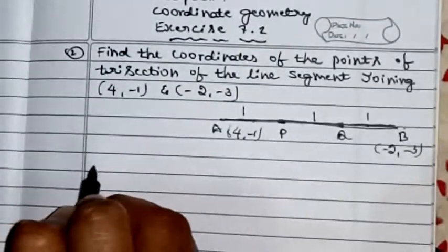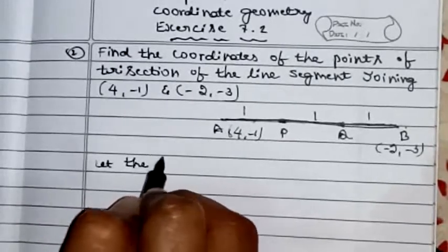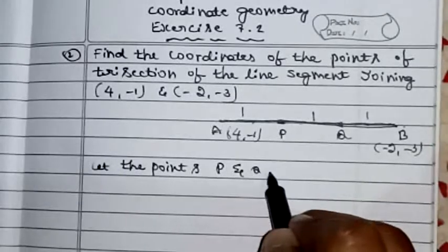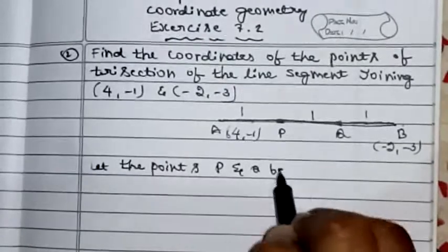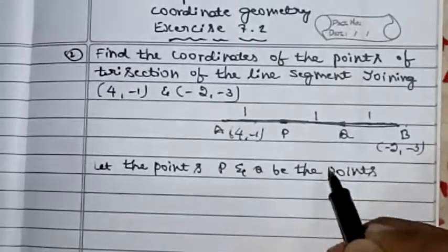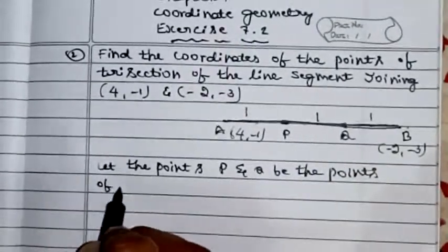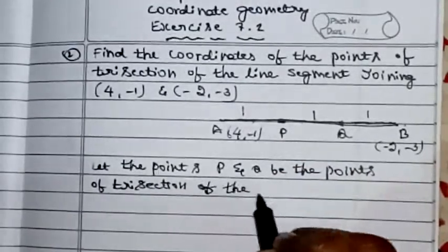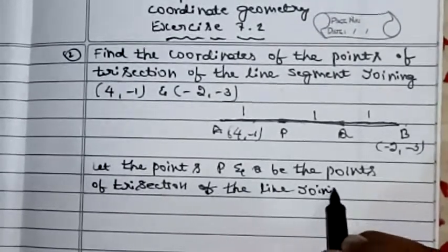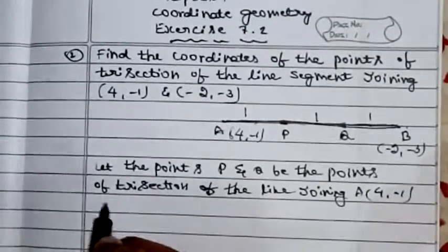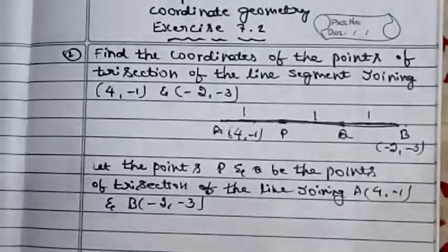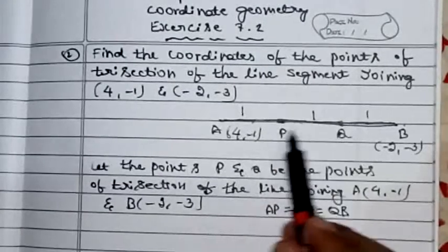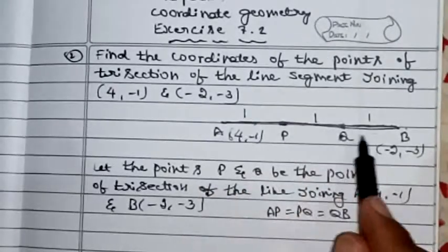Let P and Q be the points of trisection of the line joining A(4, -1) and B(-2, -3). Therefore AP = PQ = QB, meaning the segment is divided into three equal parts of ratio 1:1:1.